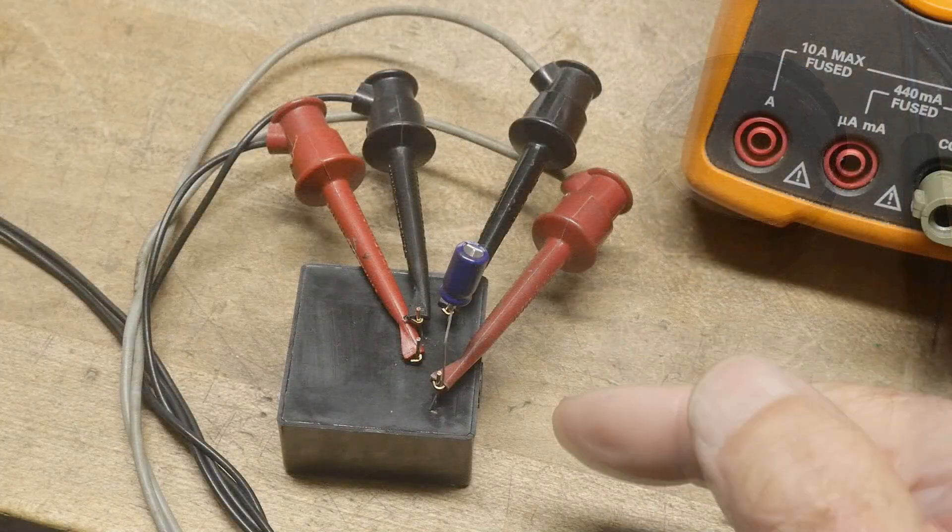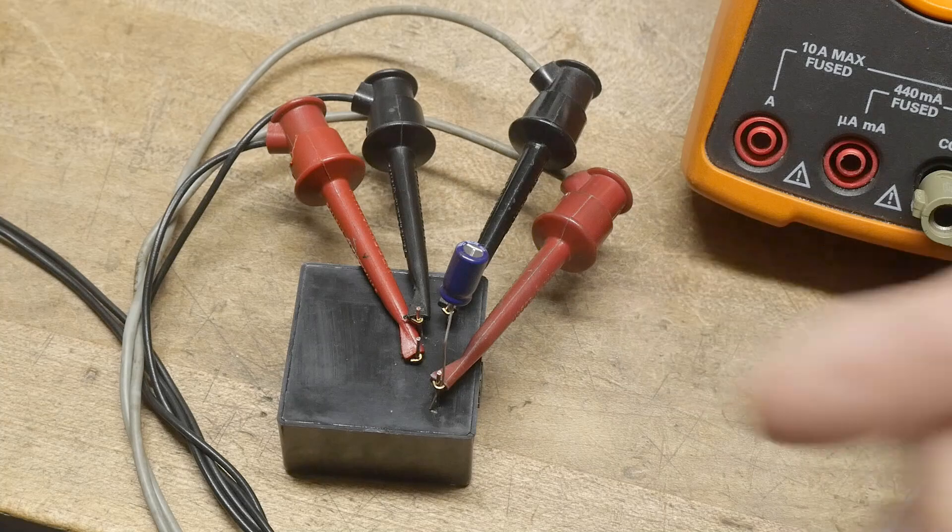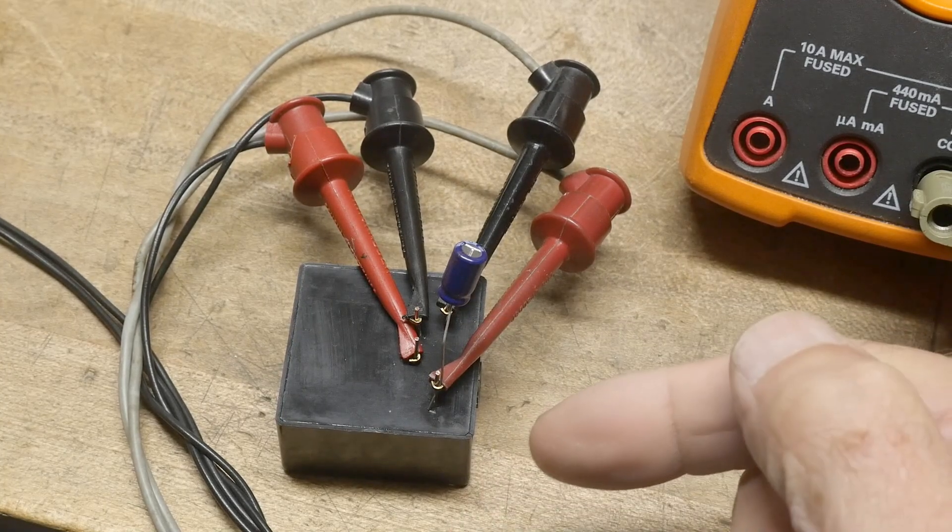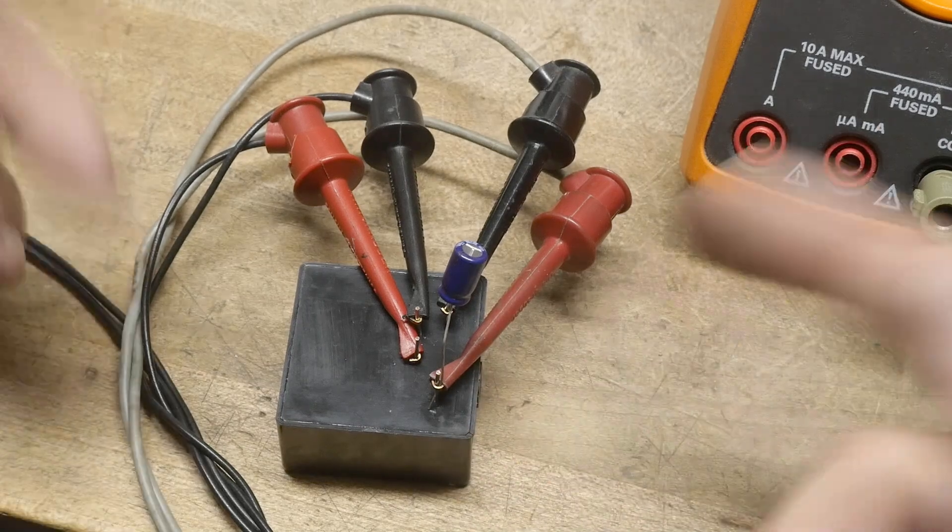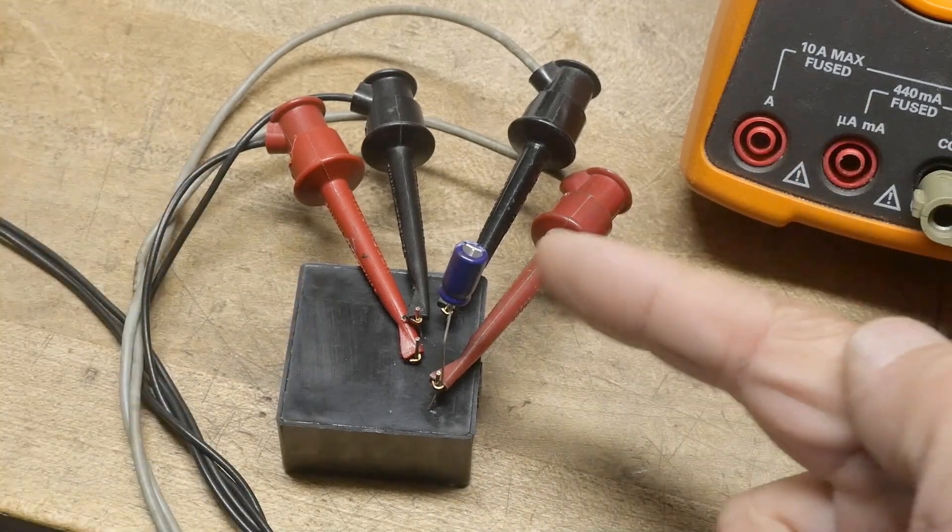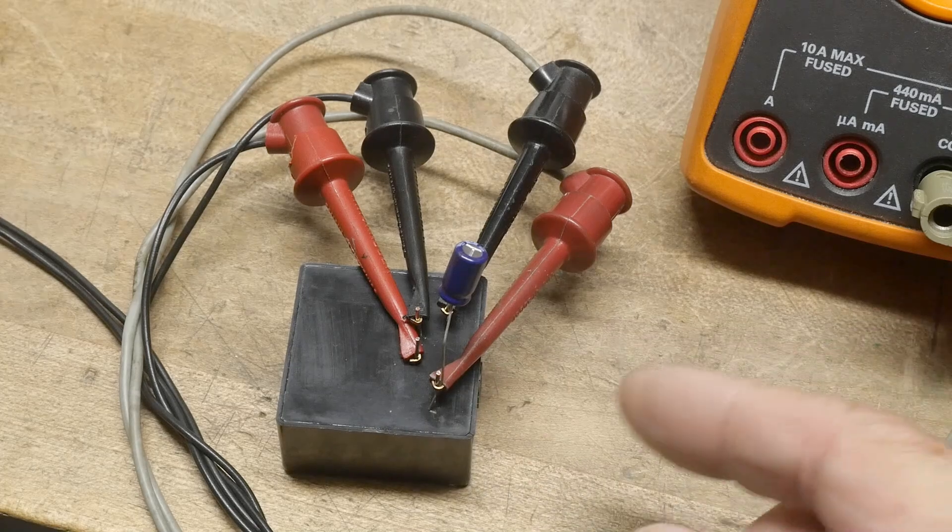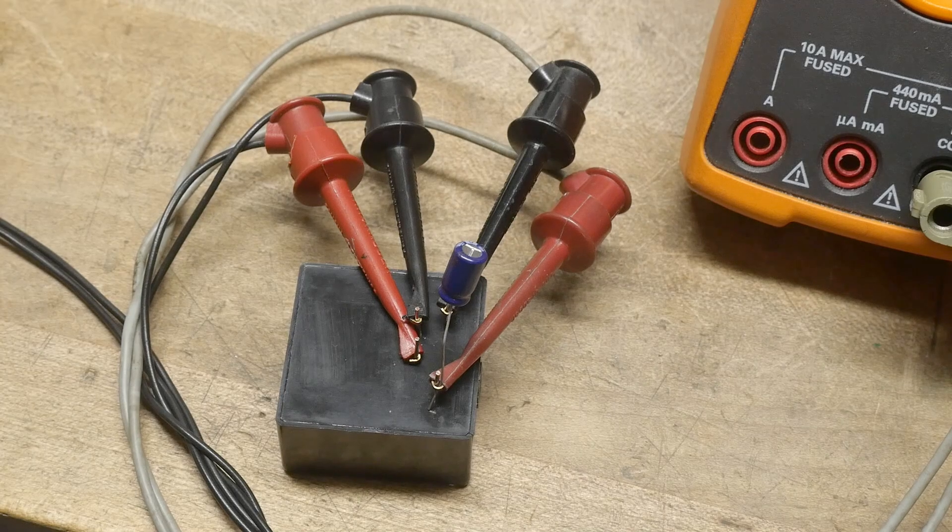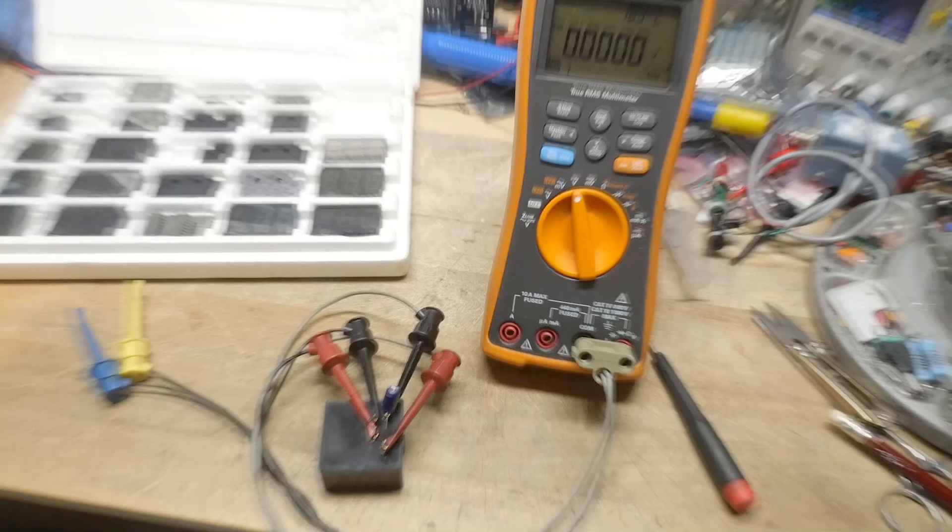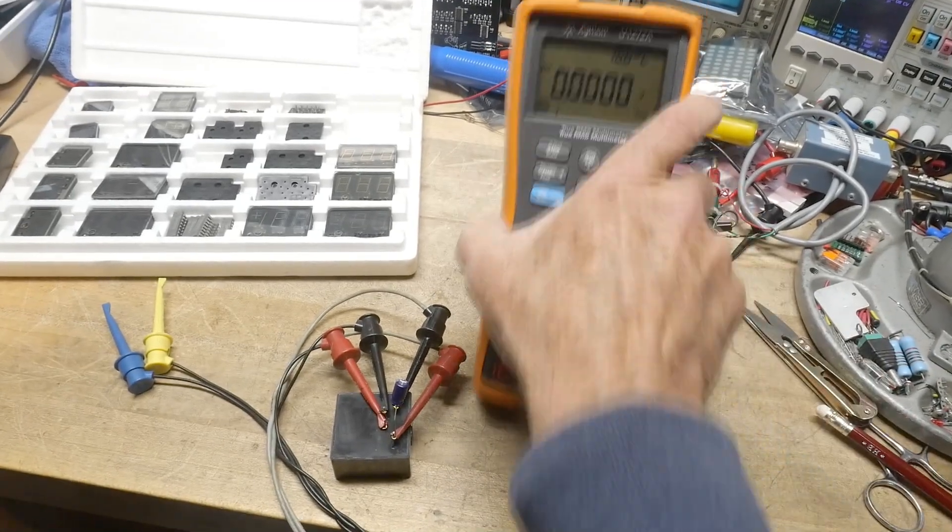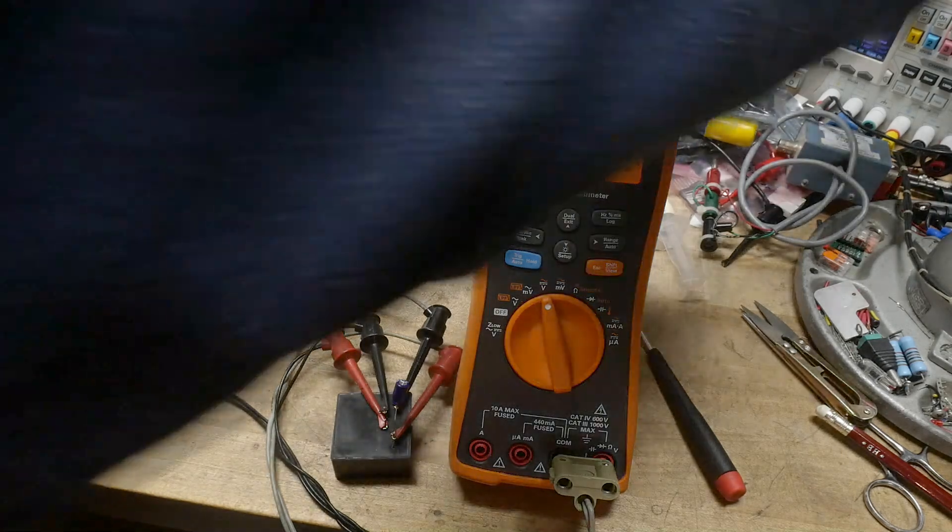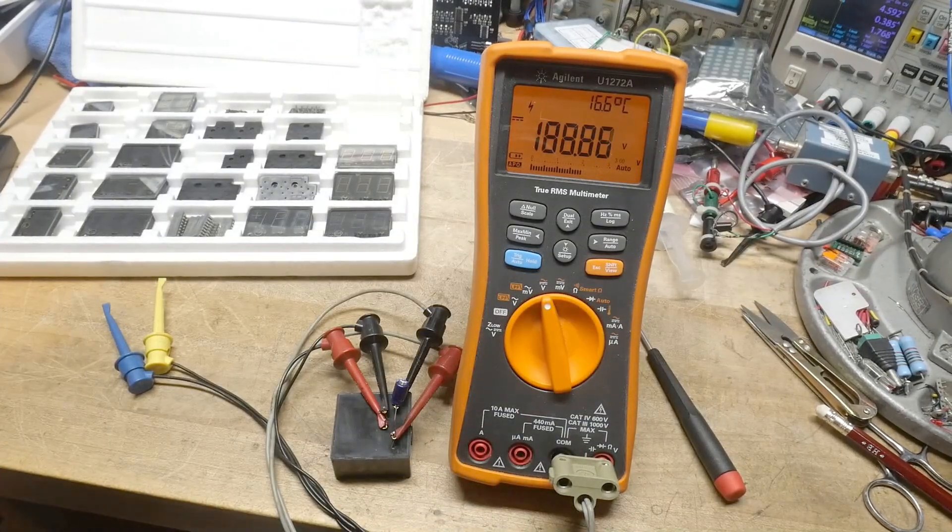So I have it hooked up here, input and output. I think it would need a capacitor on the output unless there's one on the inside. The first time I tried it, it didn't seem to work well without a capacitor, so I have a one microfarad 250 volt capacitor on the output here. Let's turn on my meter and get this all in camera.